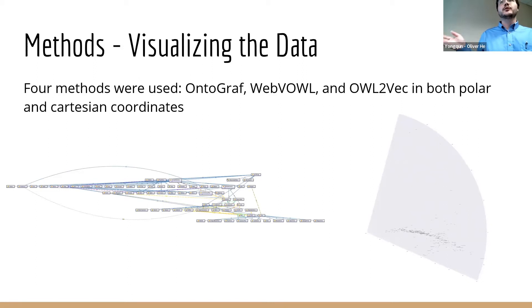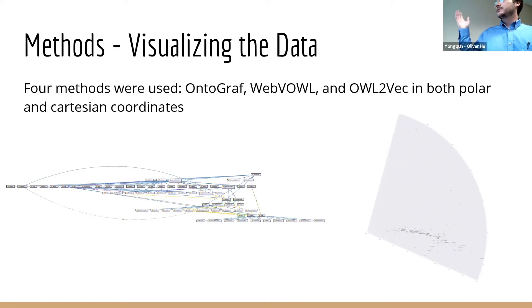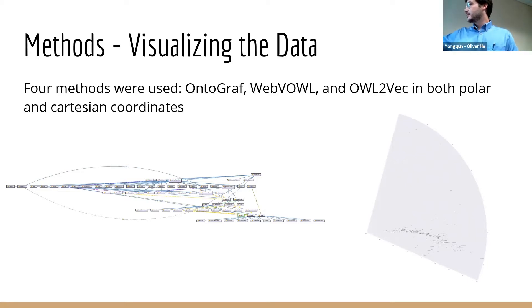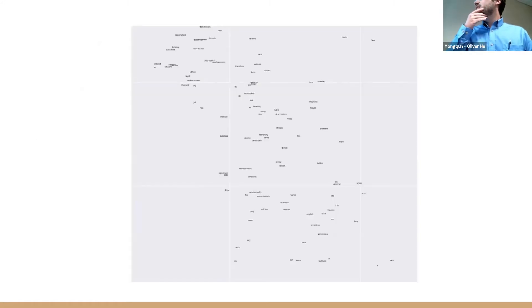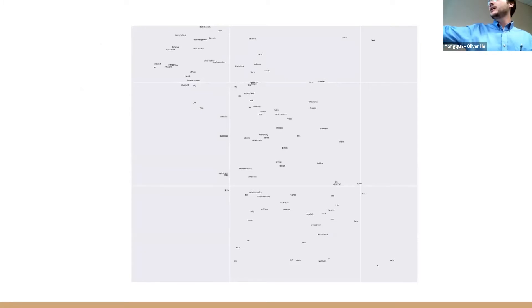I visualized the data using Ontograph and Web Visual OWL — both Protege plugins. Ontograph I used for the tree diagram view; Web Visual OWL creates a less directed graph. Then I took OWL2Vec and visualized the data in both polar and Cartesian coordinates. Participants were given a very large image file and they could zoom in and look at where all the terms in the ontology were scattered in the projection. Circle viz was the radial visualization tool and square viz was the visualization tool with Cartesian coordinates — essentially a scatter plot of terms in your ontology in a geometric space.